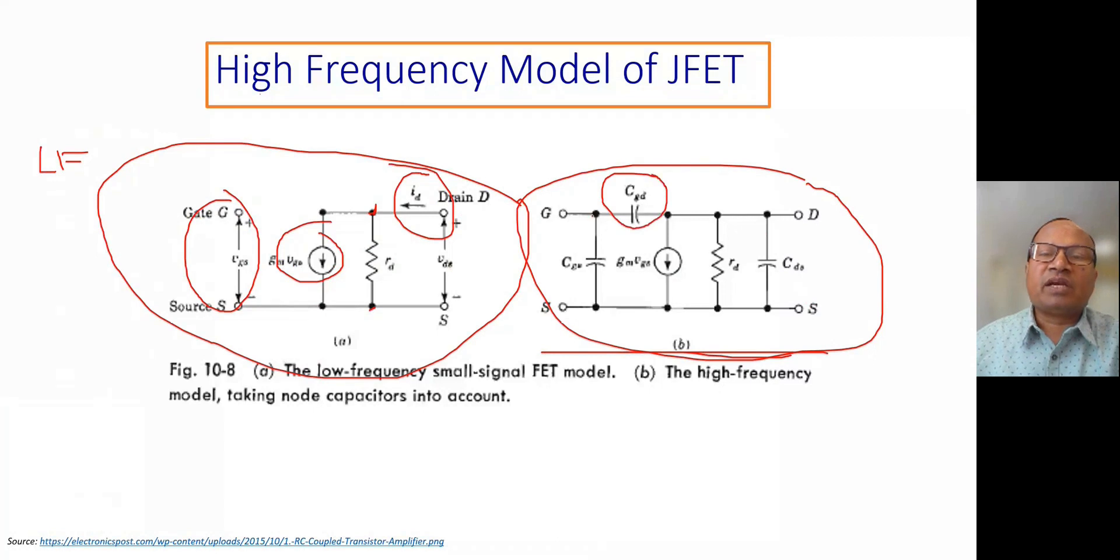CGD between gate and drain, CGS between gate and source, and there is one more, which is CDS, drain and source. So how these inter-electrode capacitances are appearing when we are in high frequency? The reason is very simple.